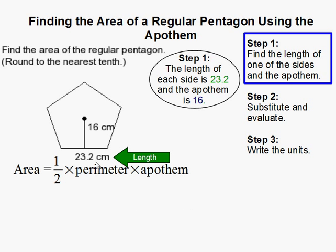Alright, so in this problem we're given that the length is 23.2, which means all of them are 23.2 each, and the apothem is 16 centimeters.